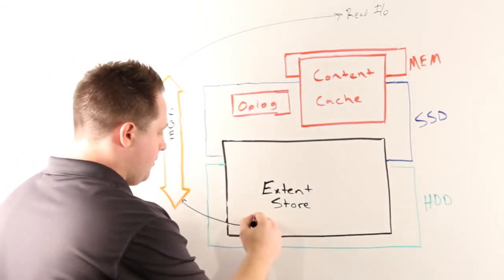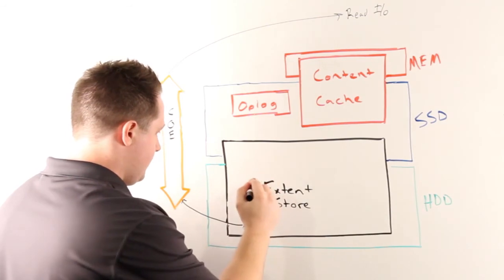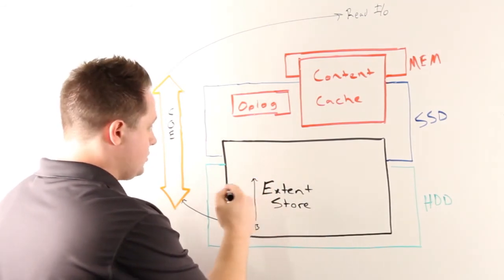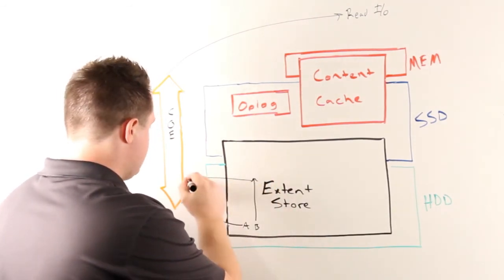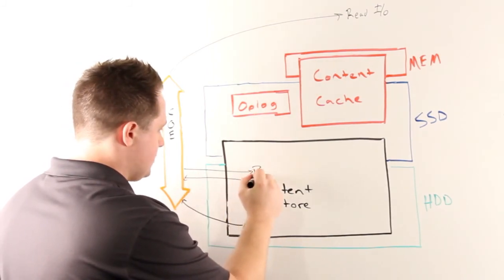For data that is heavily accessed or frequently accessed, ILM will actually up-migrate that data. From there, it can become uncompressed and written back into our extent store.